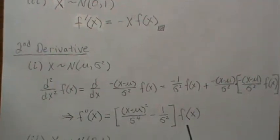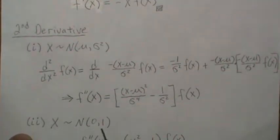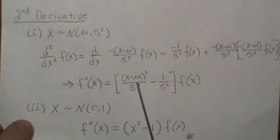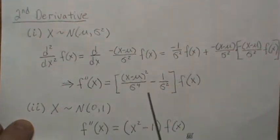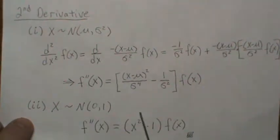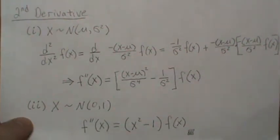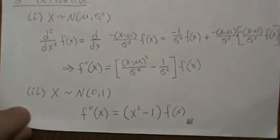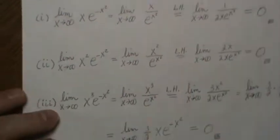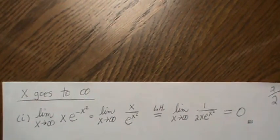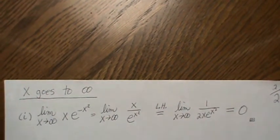Now if X were a standard normal density then μ is zero and the variance is one, and it can be written like this: it's just X² minus one times the standard normal density.